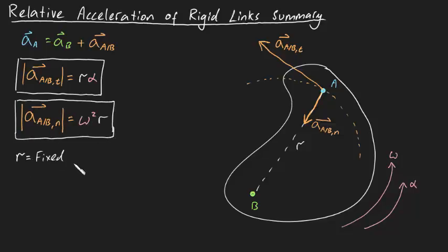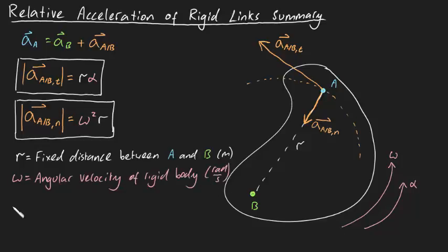r is the fixed distance between the points A and B in meters. Omega is the angular velocity of the rigid body in radians per second. And alpha is the angular acceleration of the rigid body in radians per second squared.